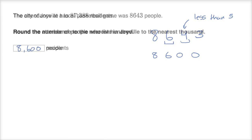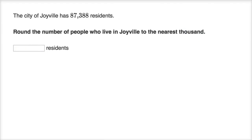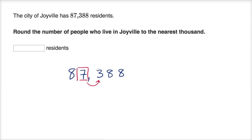Let's do one more. The city of Joyville has 87,388 residents. Round the number of people who live in Joyville to the nearest 1,000. We have 87,388. We want to round to the nearest 1,000, so we go one place to the right. We see that it is less than five, so we round down to 87,000. That is the nearest 1,000.